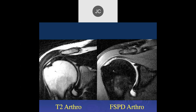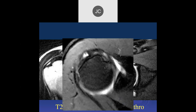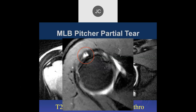Looking at the supraspinatus tendon, there's some undersurface signal. On the fat-sat it looks like at least interstitial tearing, maybe 50%. Here's the axial image — some interstitial signal. This was a high-grade interstitial partial tear in a Major League Baseball pitcher. He went to some physical therapy and then ended up pitching for the rest of the season — and to my knowledge, he never went to surgery.